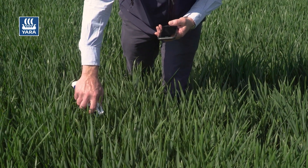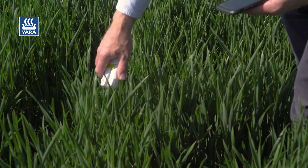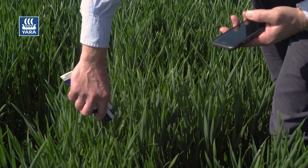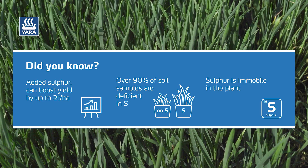Following the uptake of nitrogen by the plant, it's about maximizing the utilization of the nitrogen within the plant. We know that utilization is affected by a number of key nutrients, but one of the most important is sulfur. Data from labs shows that over 90% of soils are deficient in sulfur, so it's a really important consideration when it comes to maximizing nitrogen use efficiency.